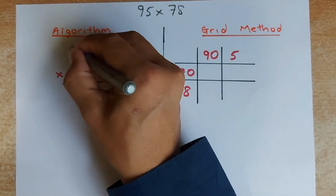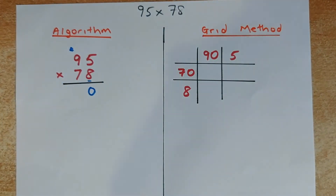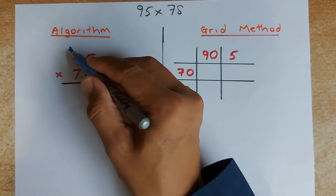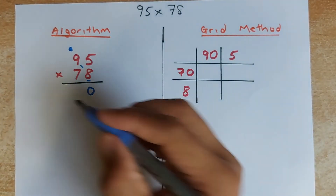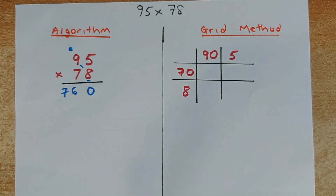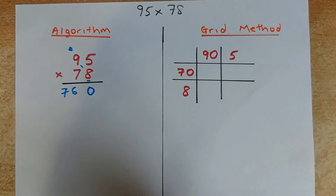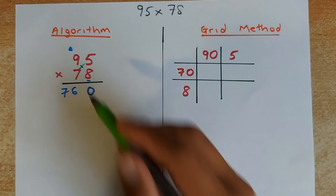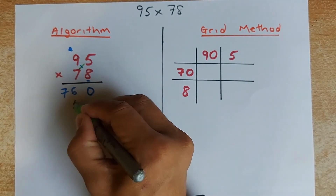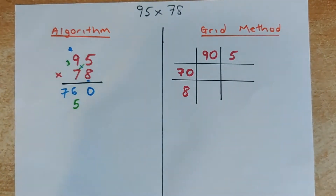So now what you are going to do, you are going to multiply 9 times 8, which is 72. And don't forget your 4 — 72 plus 4 is going to be 76. Now what do you do? You are going to multiply the 7. So 7 times 5 is going to be 35 — so 5, and the remainder is 3.